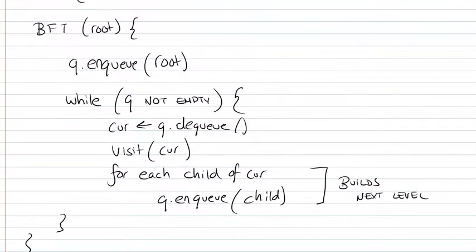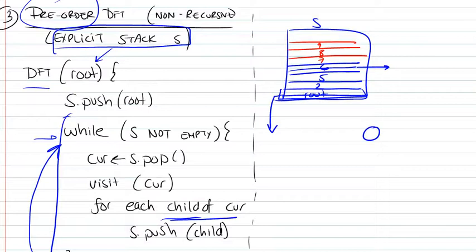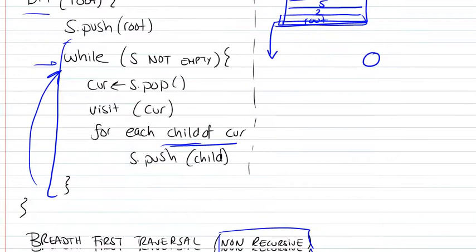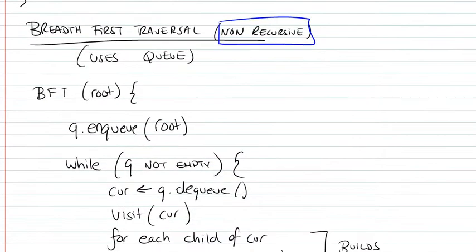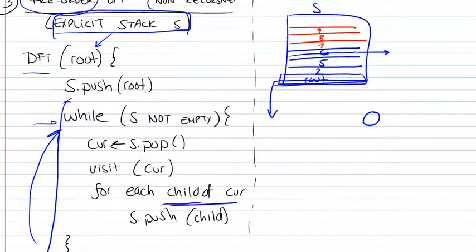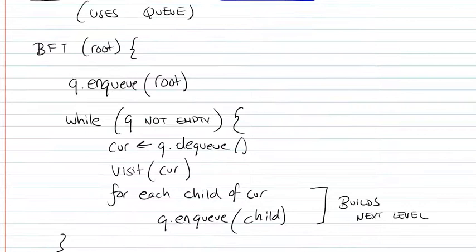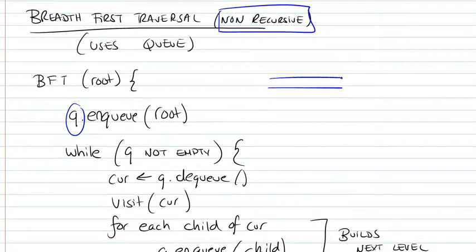So if you know the non-recursive algorithm of a pre-order DFT, then all you have to do to get the BFT algorithm is to replace the stack S by a queue. And this substitution will have the effect that you will be visiting the nodes level by level instead of going deeper and deeper.